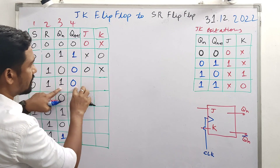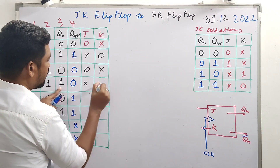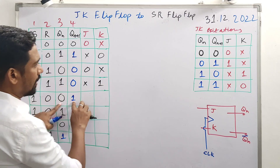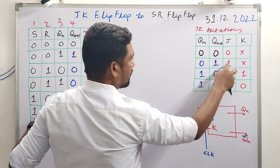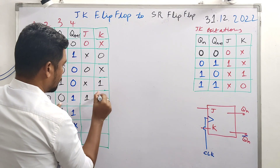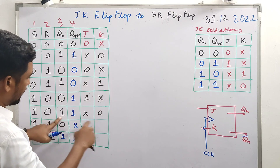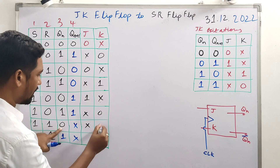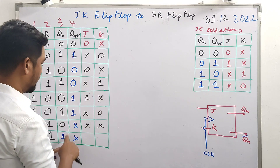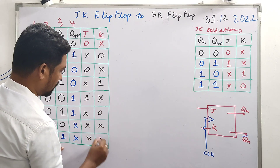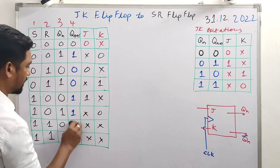Continuing JK excitation values: for 0→0, J=0, K=don't care. For 1→0 (reset): J=don't care, K=1. For 0→1 (set): J=1, K=don't care. For 1→1: J=don't care, K=0. The don't care combinations for the invalid SR states are also don't care in JK. The extended table is now complete.